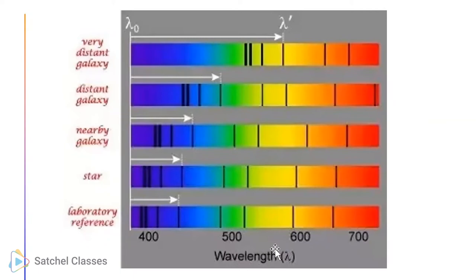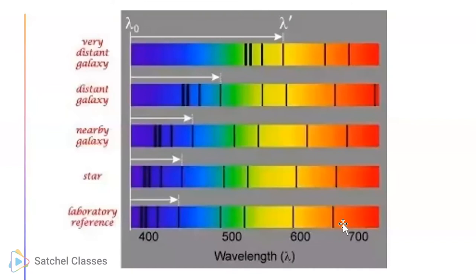If you look at this now, the wavelength - the letter for wavelength is lambda, a Greek letter. Wavelength goes from 400 in the blue all the way to 700 in the red. So red light has a longer wavelength than blue light. Violet light has an even shorter wavelength, but we'll just say blue and red for now. Red light has a longer wavelength than blue light.